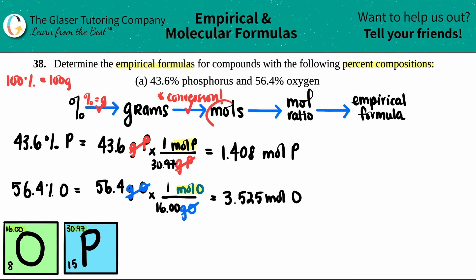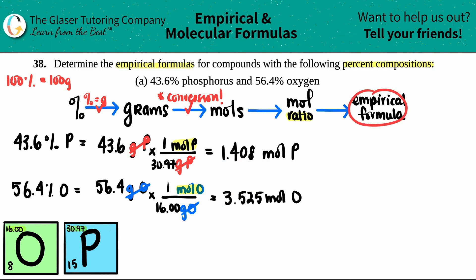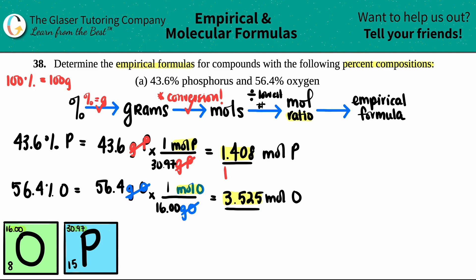Now we take the moles and convert them into a mole ratio. A ratio is just one number divided by another. To get the most simplified empirical formula, you divide by the lowest number. I have 1.408 and 3.525, and 1.408 is the smaller number, so I'm going to divide each one by 1.408.